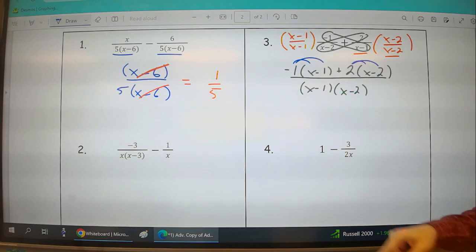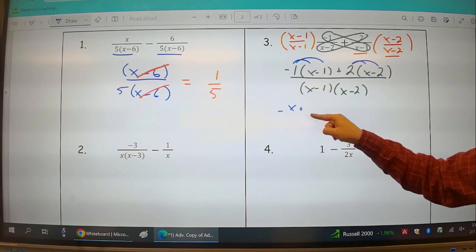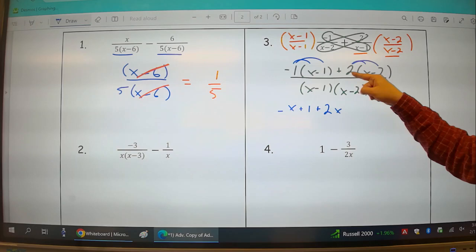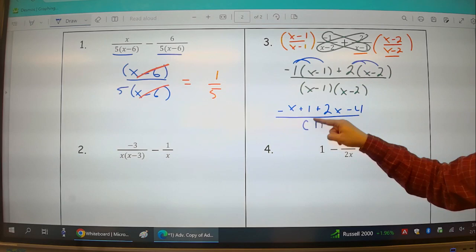Negative 1 times x, negative x. Negative 1 times negative 1, plus 1. 2 times x, plus 2x. 2 times minus 2, minus 4 over my common denominator. I'm just going to call it CD.